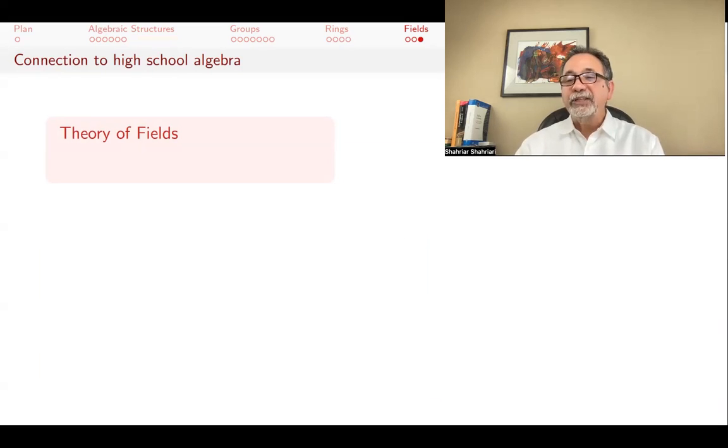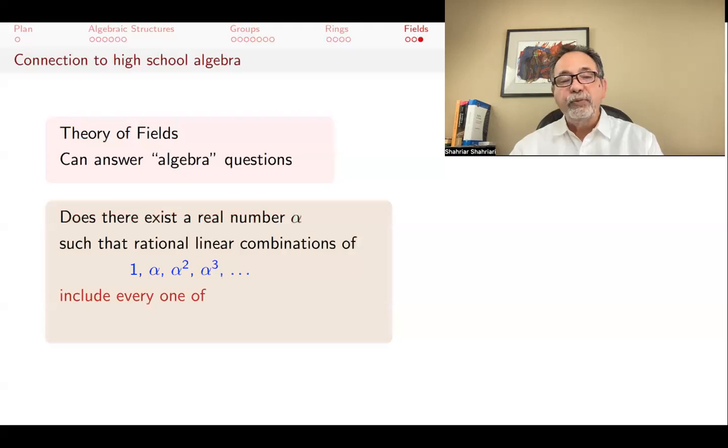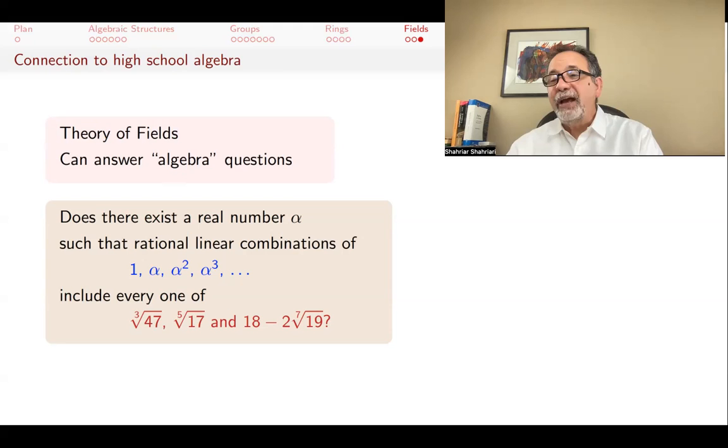You can also, using field theory, be able to answer a lot of questions that you could ask. You probably wouldn't, but you could ask in a high school algebra class. Here's an example. Is there a real number alpha such that using the rational linear combinations of 1 and powers of alpha, you can get every one of cube root of 47, fifth root of 17, and 18 minus 2 times seventh root of 19? Can I do that or not? This is a question we can answer after a bit of field theory.